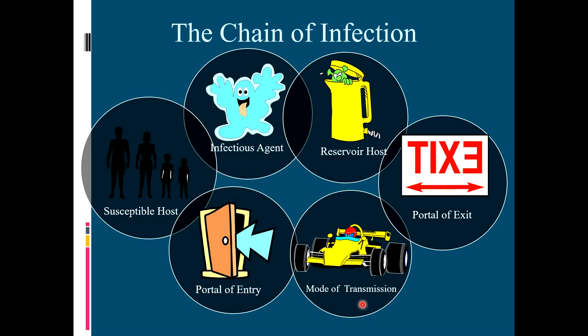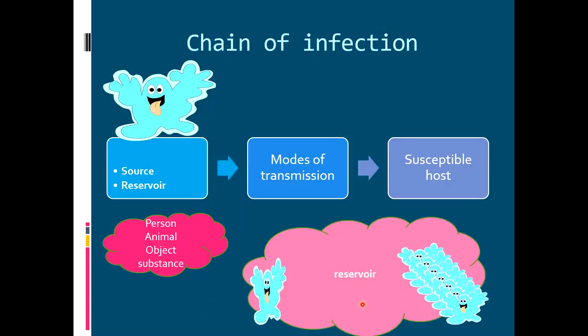Simply stated, the reservoir or source of infection, through modes of transmission reaching the susceptible host, maintains the chain of infection. While discussing the chain of infection, there are three important components, and we have already introduced the source and reservoir.